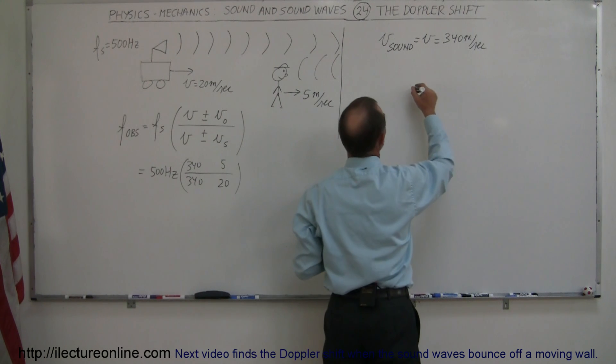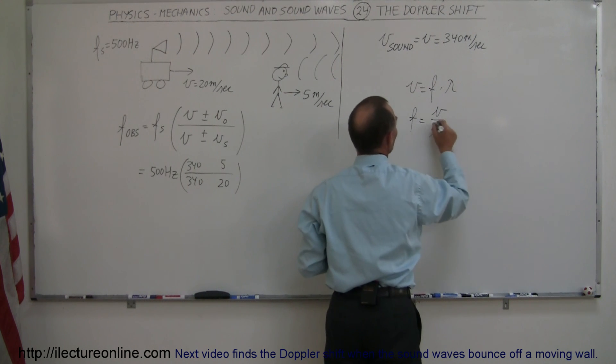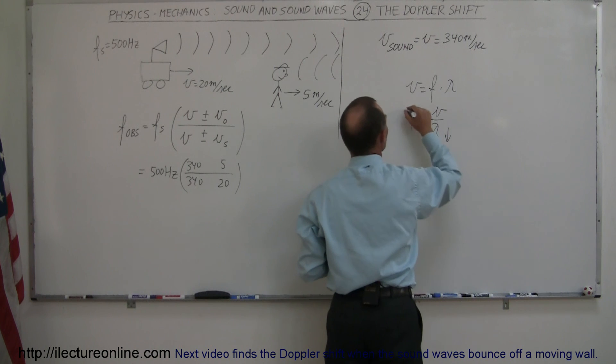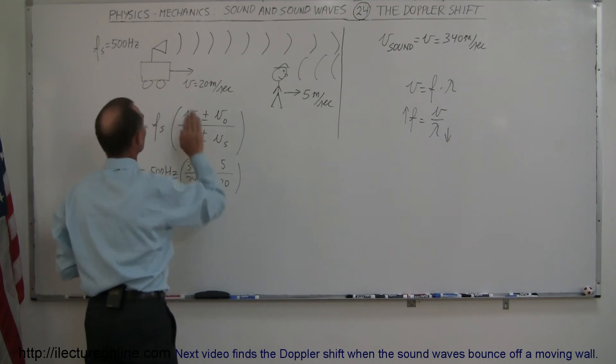Remember the equation that the velocity equals frequency times wavelength, so the frequency is equal to the velocity divided by the wavelength. If the wavelengths get smaller, the frequency gets larger. So we expect to hear a higher frequency.